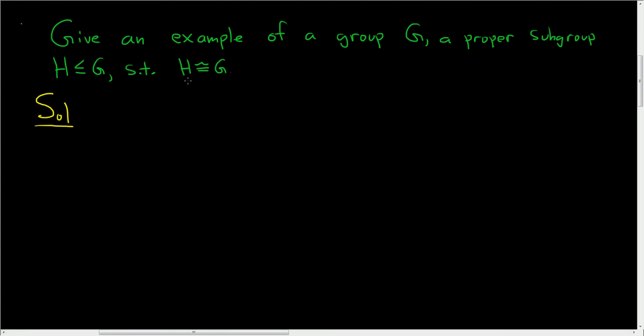Because, see, if two groups are isomorphic, that means their cardinality is the same. So if you have finite groups and you do this, it's not going to work, right? Because if H is finite and G is finite, and you take H as a proper subgroup, then H has less elements than G, so the cardinality of H is strictly less than the cardinality of G, so it fails horribly.